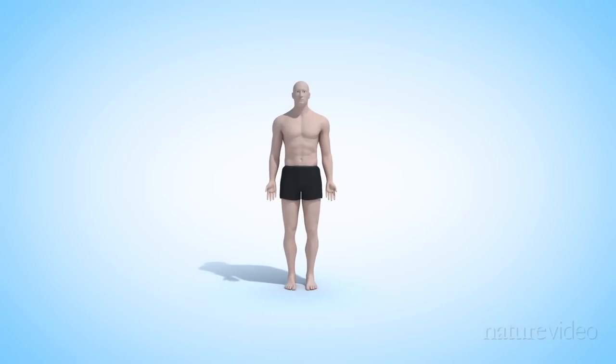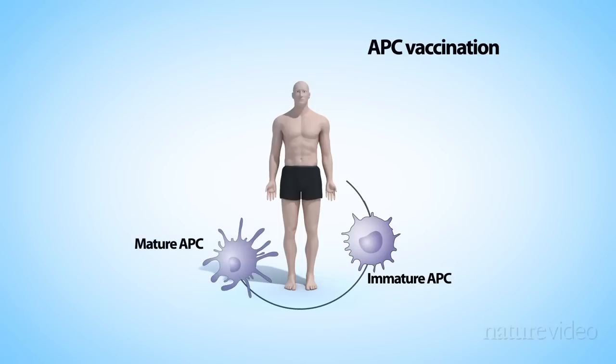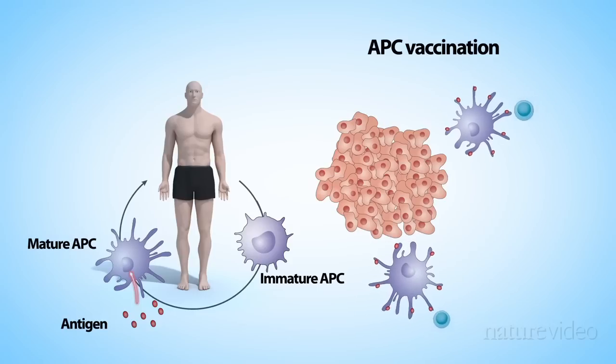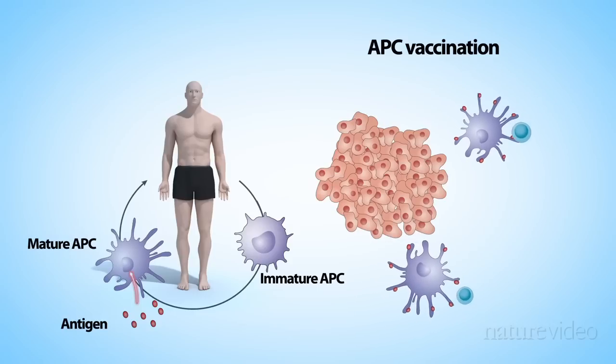But it's also possible to vaccinate with a person's own immune cells. For example, antigen-presenting cells can be taken from patients, matured outside the body and loaded with tumor antigen. When the cells are reintroduced to the patient, the antigen stimulates other immune cells and helps them to recognize the tumor.